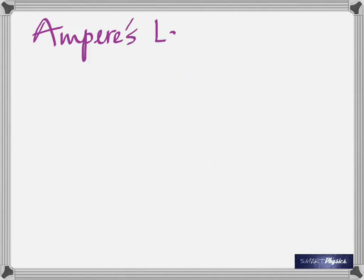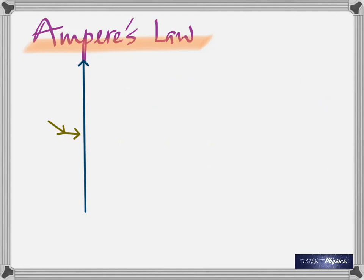I want to start this chapter with a magnificent law called Ampere's Law, because using this we're going to derive all the equations. That's why the unit of electric current is given in its name — it's such a useful law. We have a straight conductor carrying current, with the current flowing upwards. The magnetic field around it is in the form of concentric circles with the center on the conductor, given by the right-hand grip rule. Now you imagine a closed loop around the conductor — need not be circular, just a closed path, maybe irregular. This path is divided into small segments, and we consider a small segment of length DL.